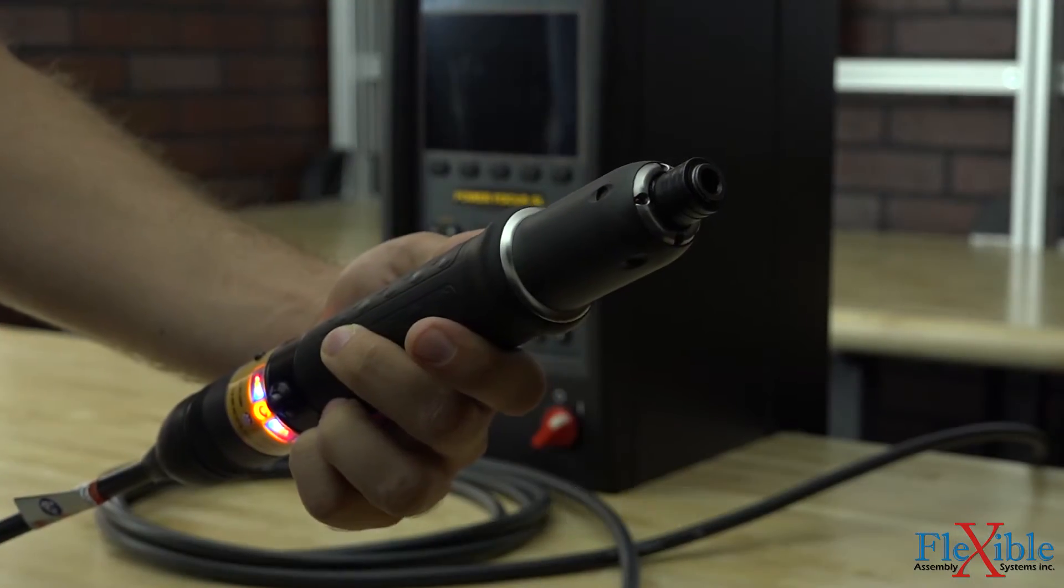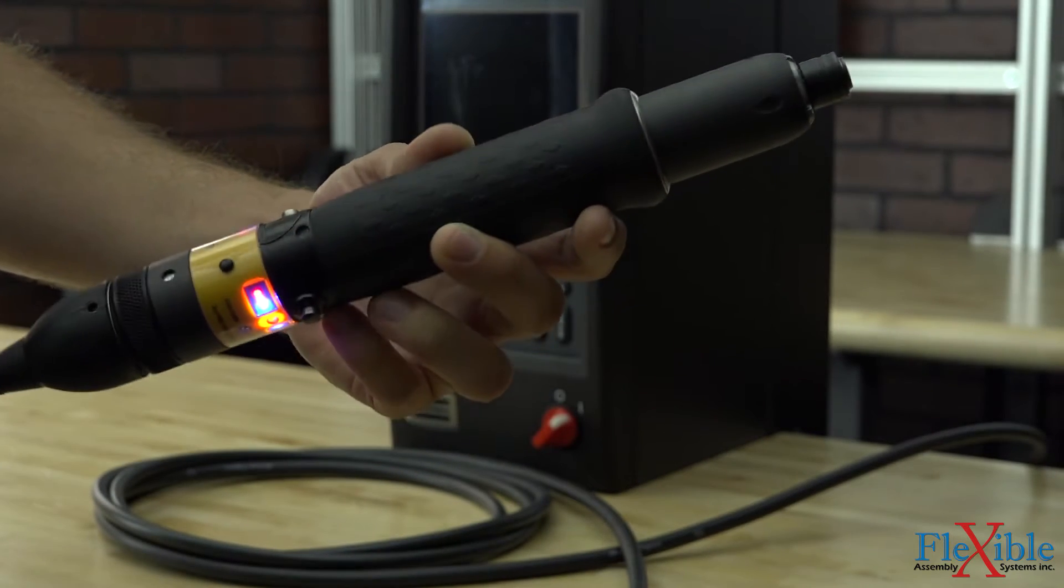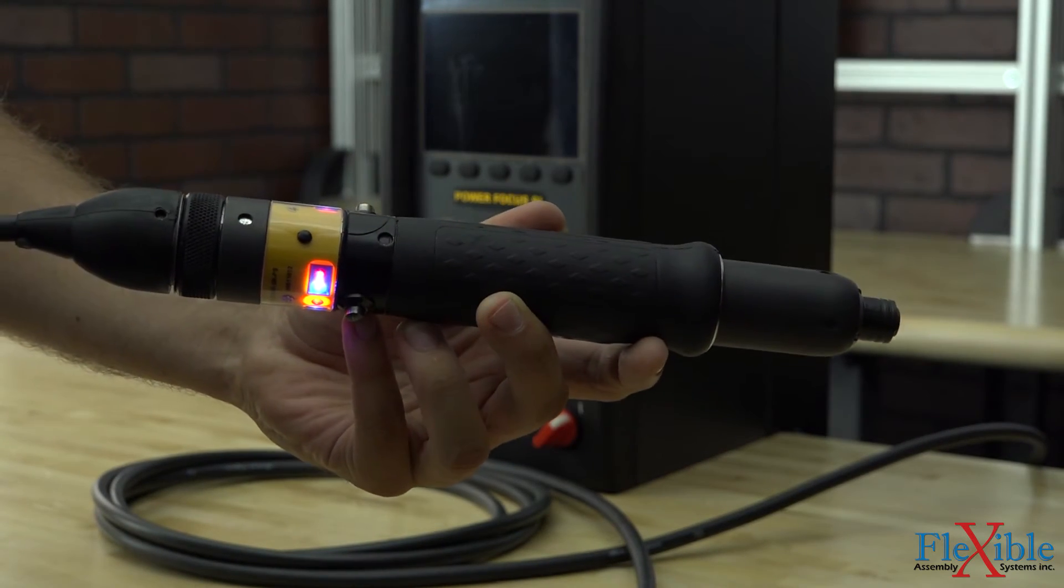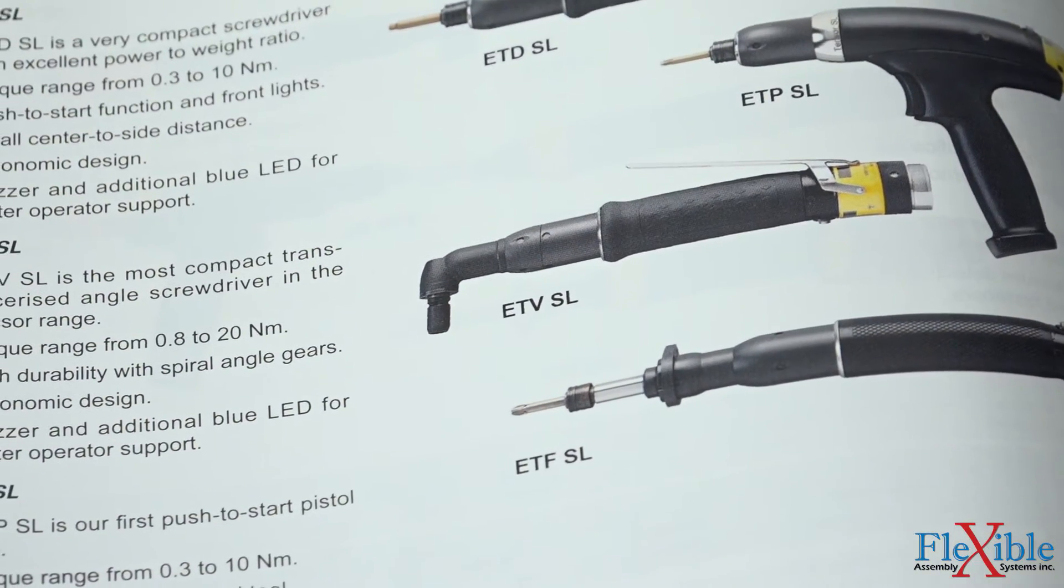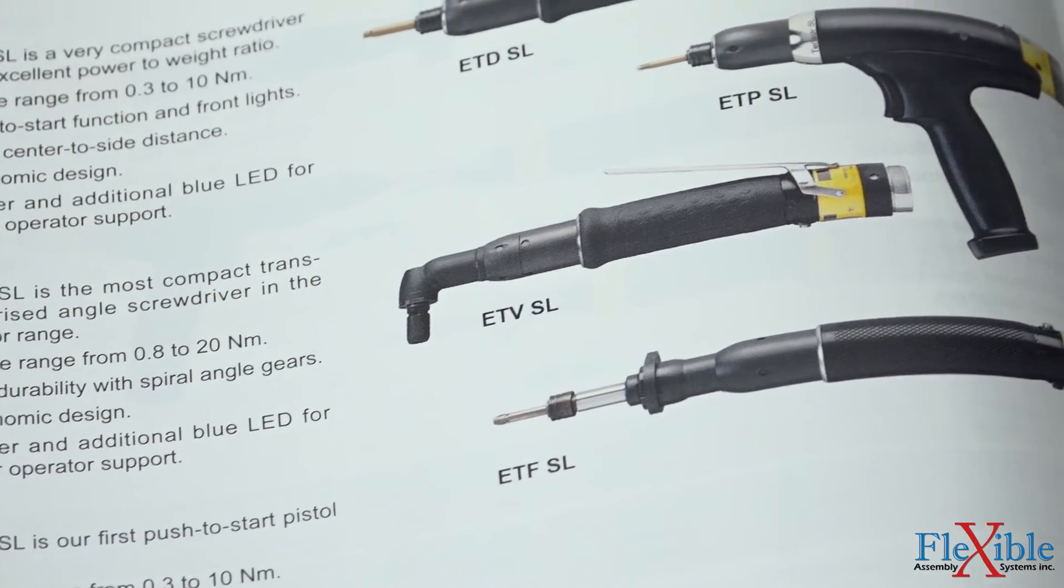The inline, pistol grip, and right angle tools all feature a buzzer and blue LED light for operator support while running down a screw. The right angle tool also sports an additional front light for assistance in dark workspaces.